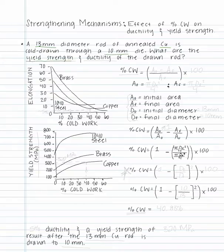What are the yield strength and ductility of the drawn rod? In order to solve this problem, we need to calculate the percent cold work that corresponds to this initial and final diameter for the copper rod. From there, we will be able to utilize the given plots to find the yield strength and ductility of the drawn rod.